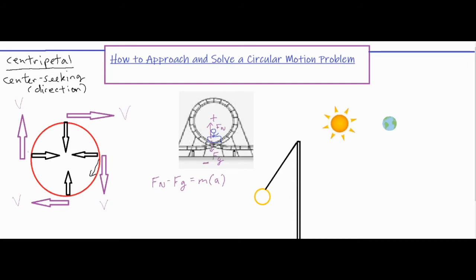Since Fn is not pointing in the centripetal direction and Fg is counteracting it, Fn is positive and Fg is negative. The sum of forces equals m times a. Since the centripetal acceleration is v² over r, you would set it up as: Fn minus Fg equals mv² over r.